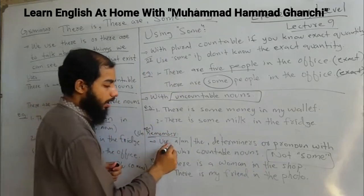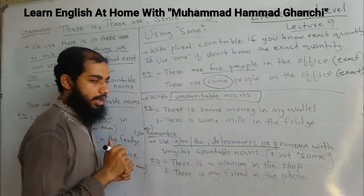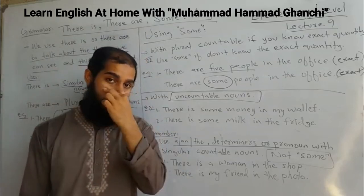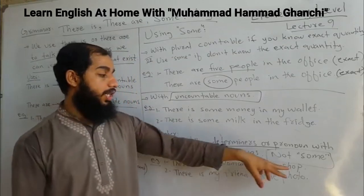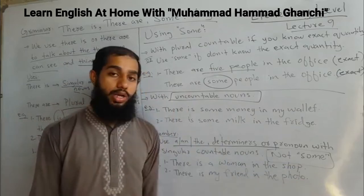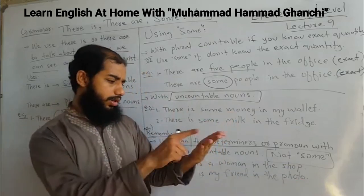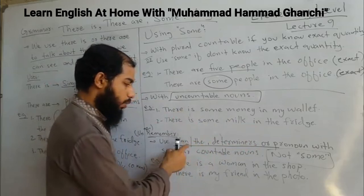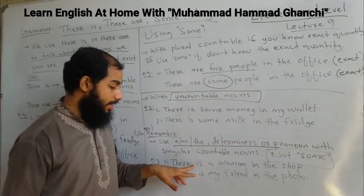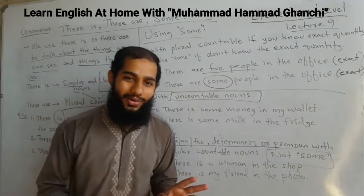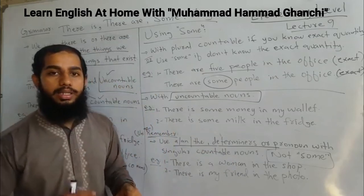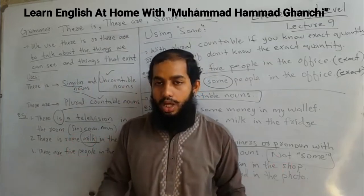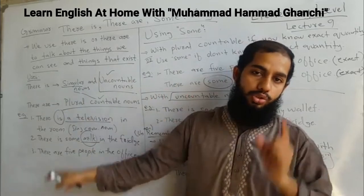One important point: with singular countable nouns, you use 'a' or 'the' — not 'some.' For example: 'There is a woman in the show' or 'There is my friend in the photo.' When talking about one person, use 'a,' 'the,' or a pronoun — not 'some.' We use 'some' only with plural countable nouns and uncountable nouns.